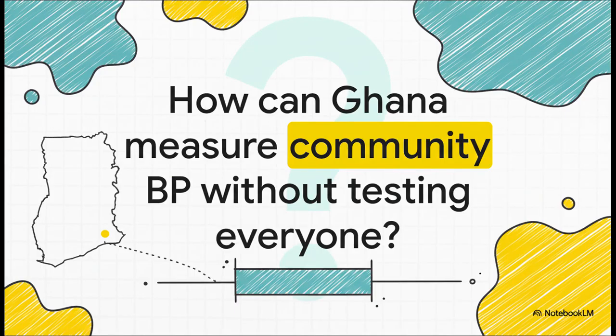Let's dive right in with a real-world scenario. Picture this, you're working for the health authority in Ghana. You've got a massive job. Figure out the true rate of high blood pressure in a huge community. This isn't just some textbook problem. This is about deciding where to put money, how many clinics you need, what kind of supplies to order. You can't test every single person, so what do you do?